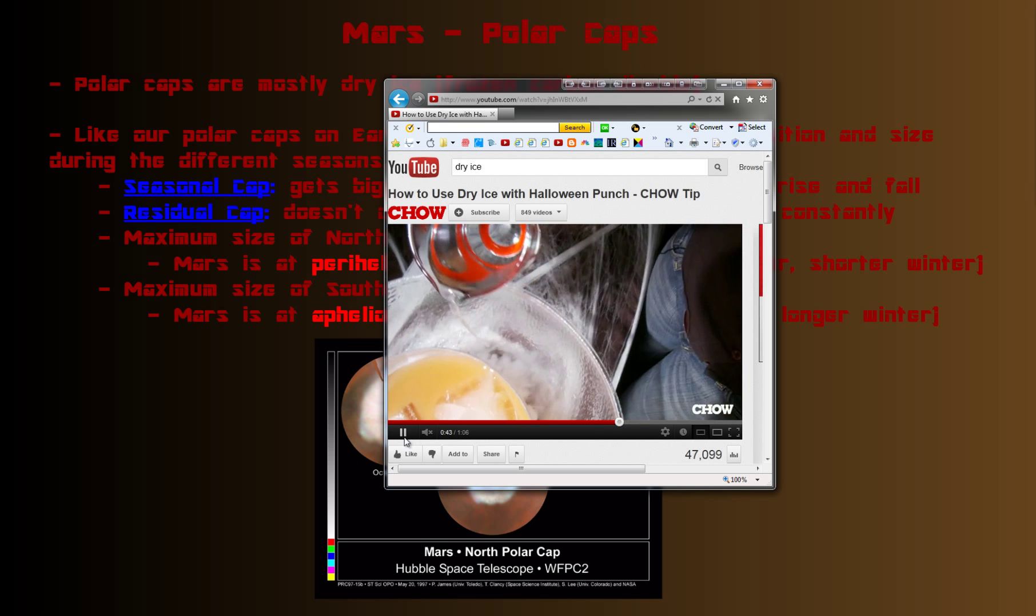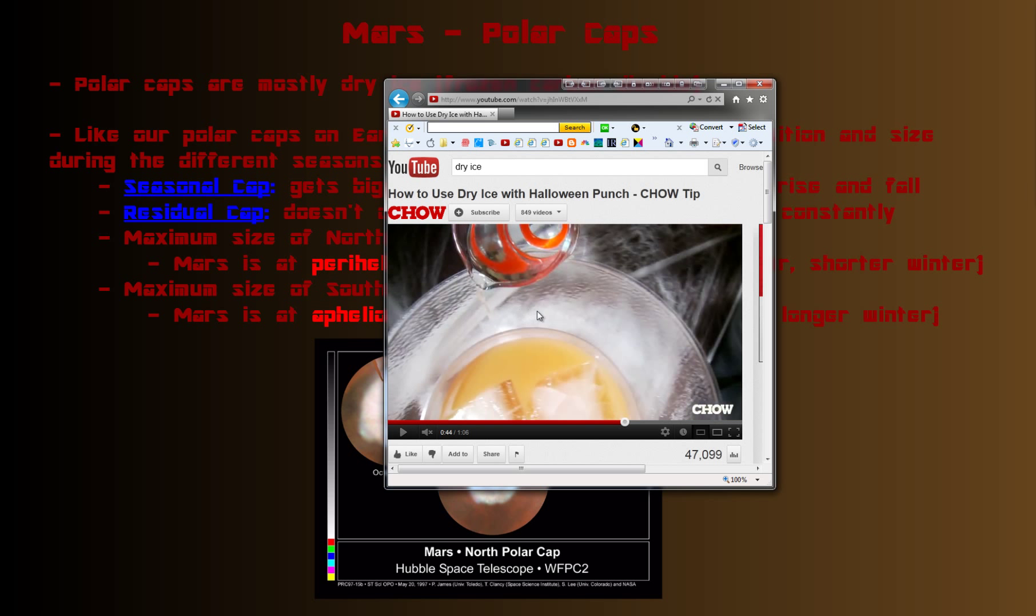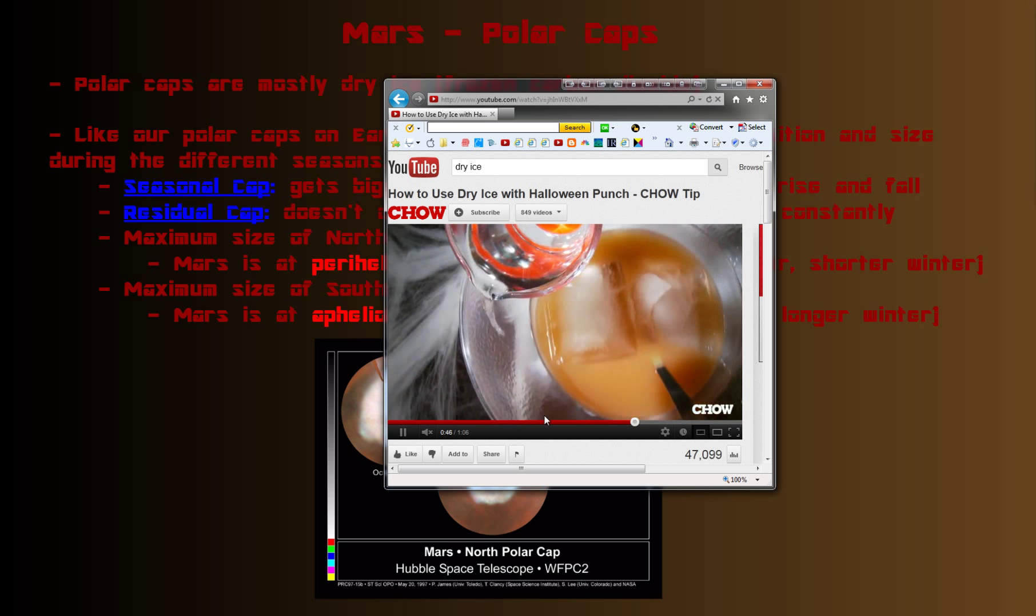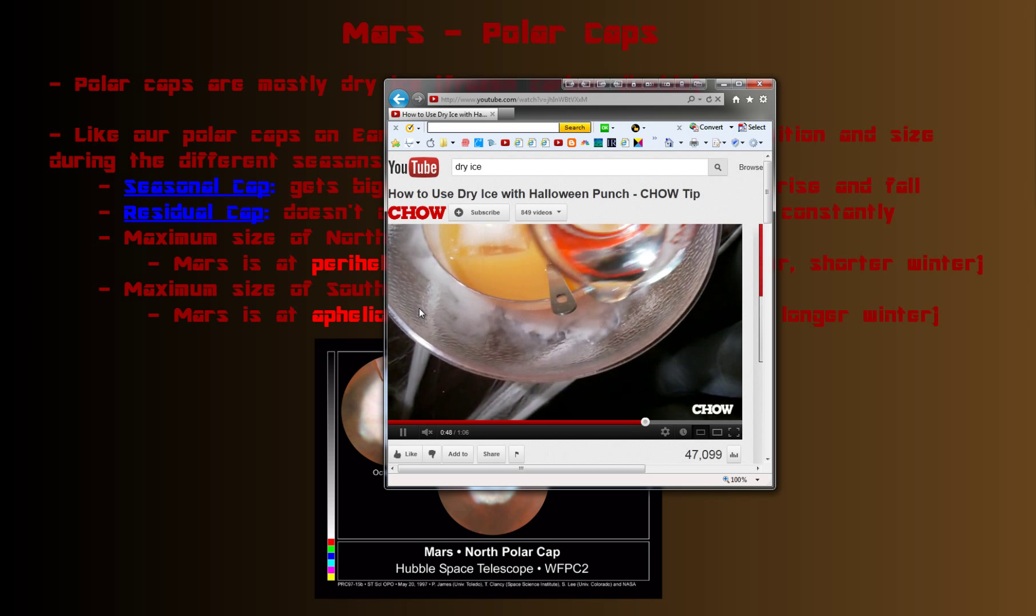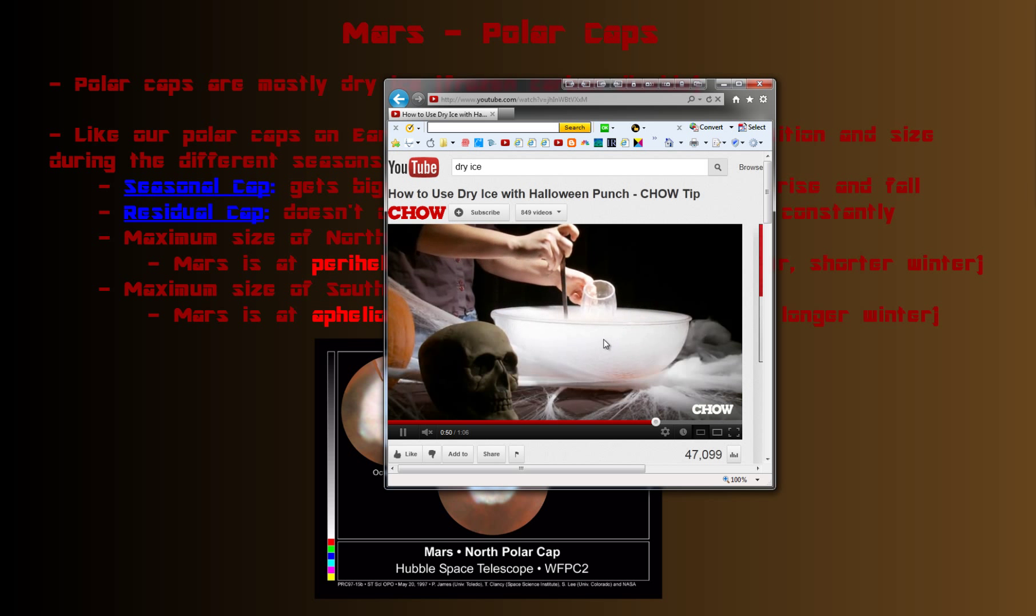Interestingly enough, dry ice doesn't turn into liquid carbon dioxide at normal atmospheric pressure on Earth. It just skips that phase and goes straight to a gas phase. That's why you get the cool fog thing, because this is gaseous CO2. It makes a nice effect for Halloween too.